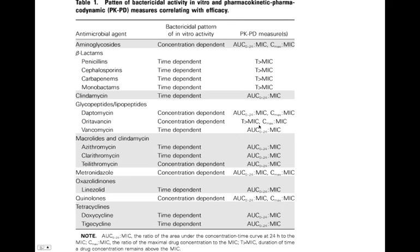We're going to use some of this in dosing aminoglycosides first. Aminoglycosides are concentration-dependent, so we're mostly interested in the AUC:MIC ratio and the Cmax:MIC ratio. We want to make sure that the Cmax:MIC ratio is optimized as well as the AUC:MIC ratio. We're going to start doing some aminoglycoside dosing in class. Thank you so much.